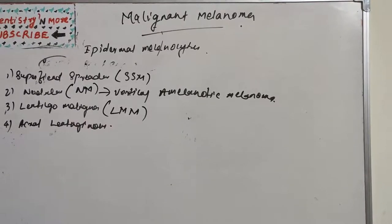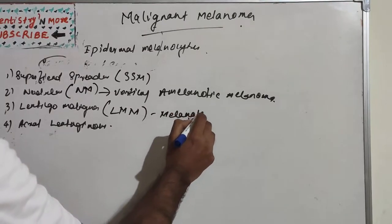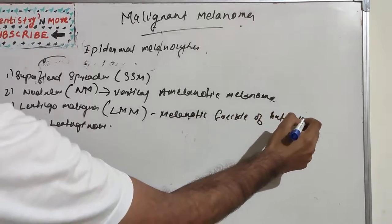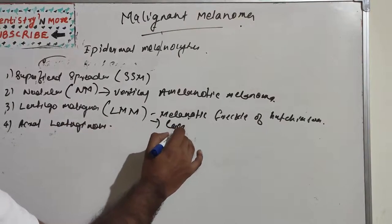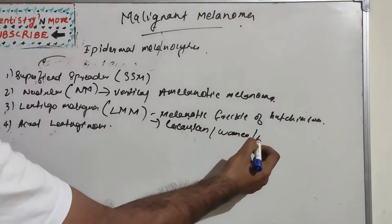Lentigo maligna melanoma (LMM) exists in a radial growth phase known as lentigo maligna or the melanotic freckle of Hutchinson. It occurs characteristically as a macular lesion on the malar skin of middle-aged and elderly Caucasian individuals, and is more common in women.